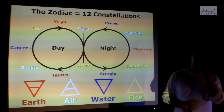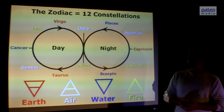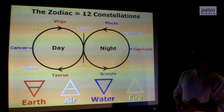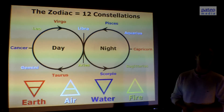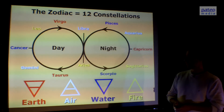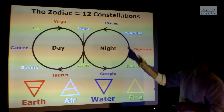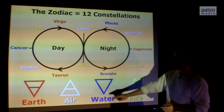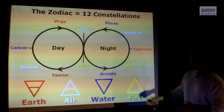These 12 periods we can also put them in the Lemniscate — the 12 constellations. We see that each constellation is related to a type of energy. There are three types related to Earth — which is Taurus, Virgo, and Capricorn — three to air, three to water, and three to fire.